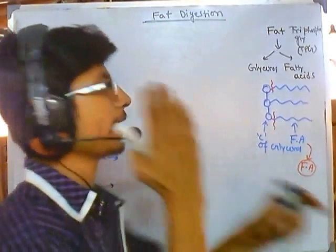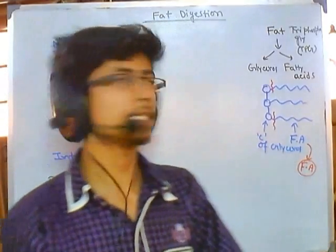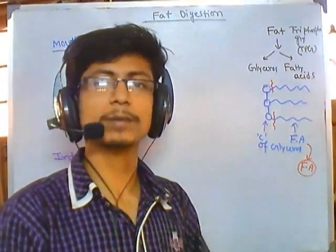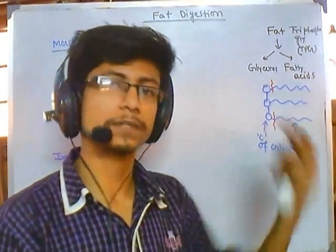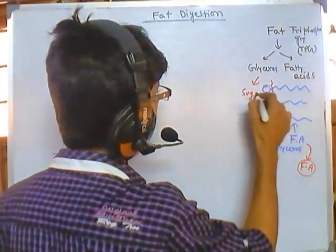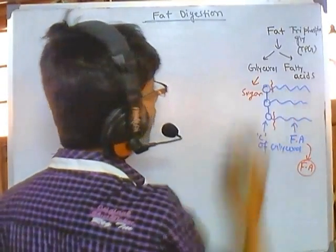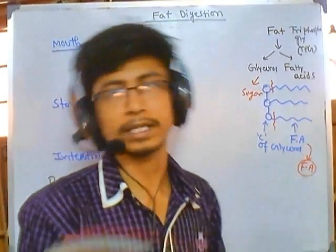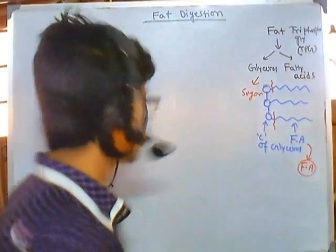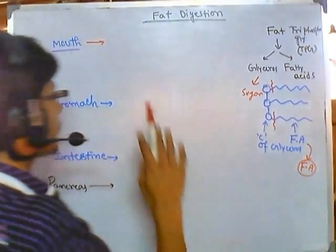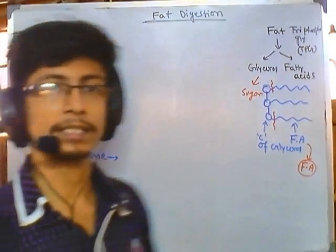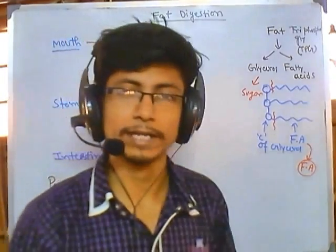Normally, fat is broken down into fatty acids and glycerol. Glycerol will be processed differently to finally produce sugar or glucose, and the fatty acids can be utilized inside the cell.